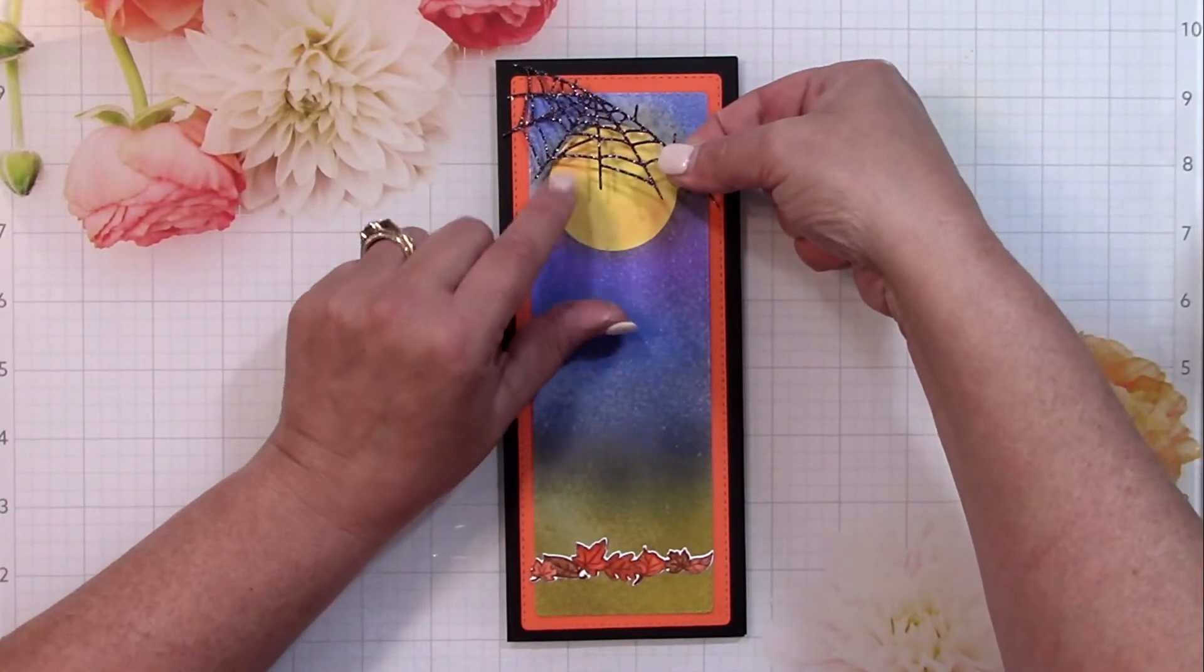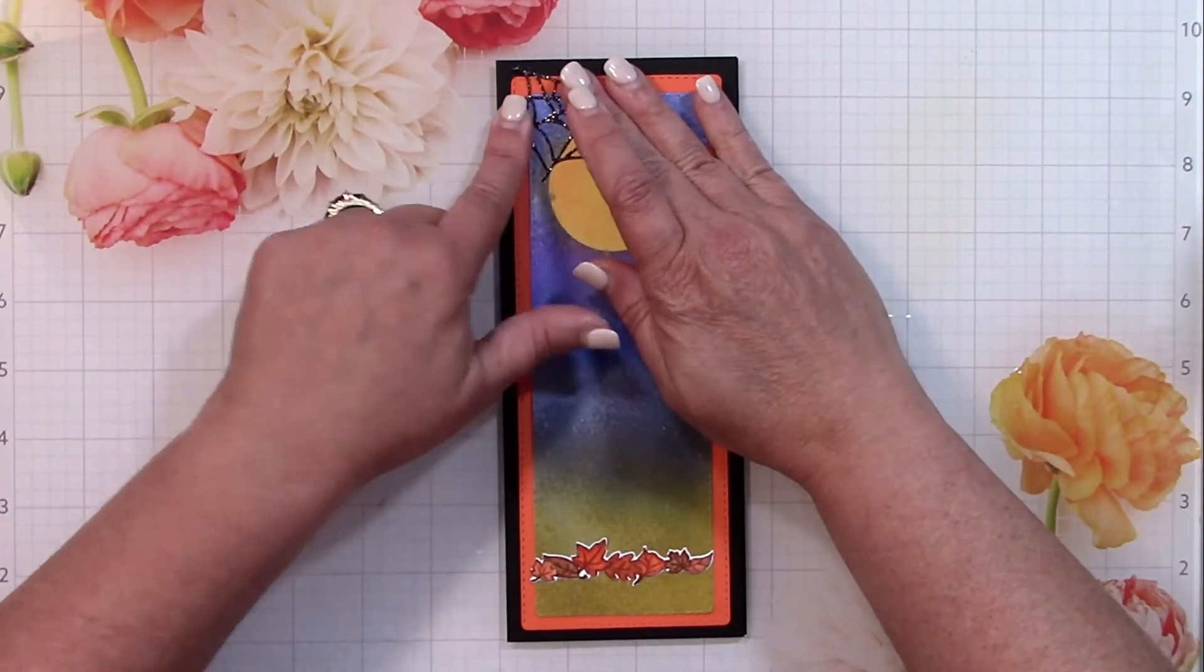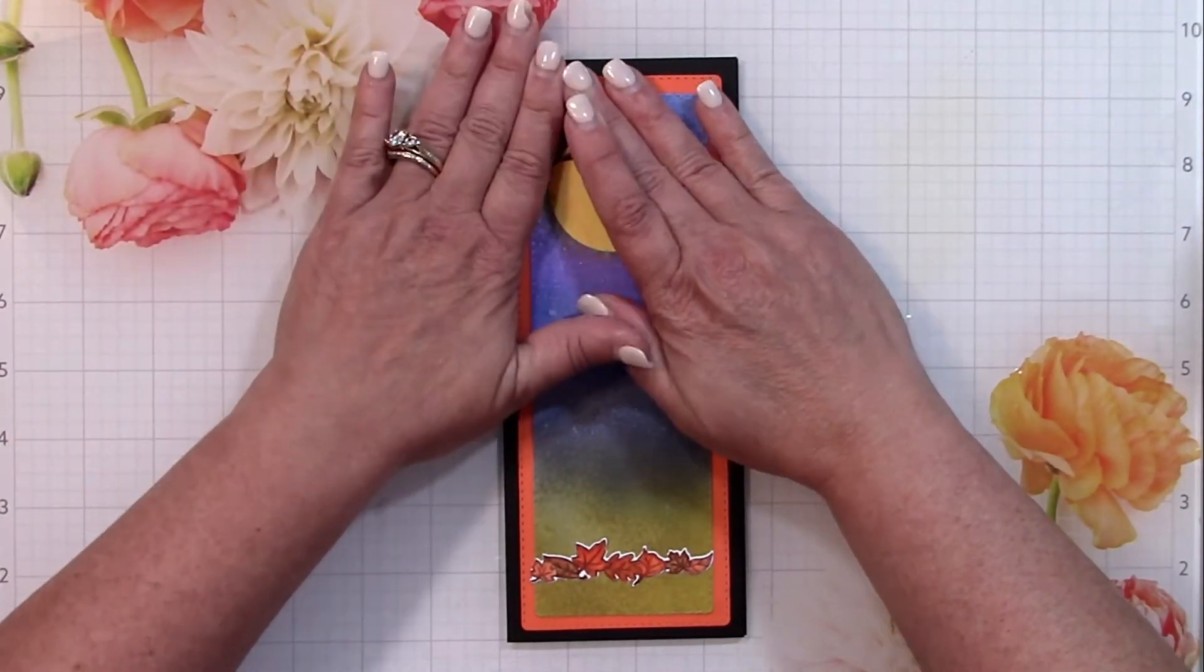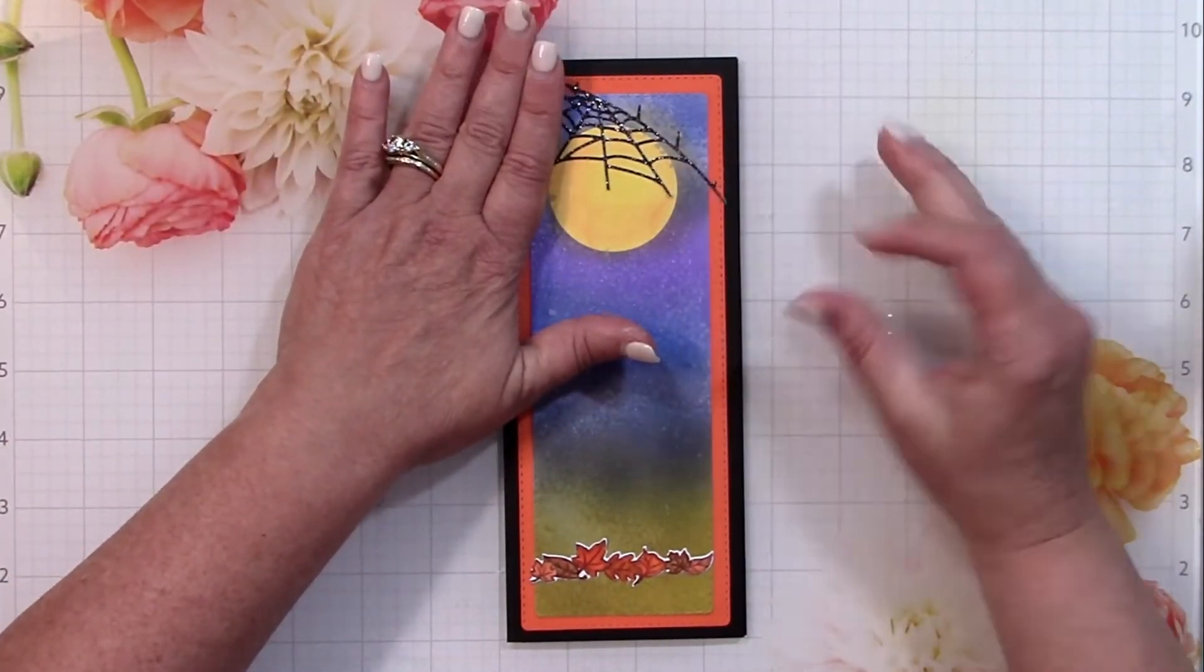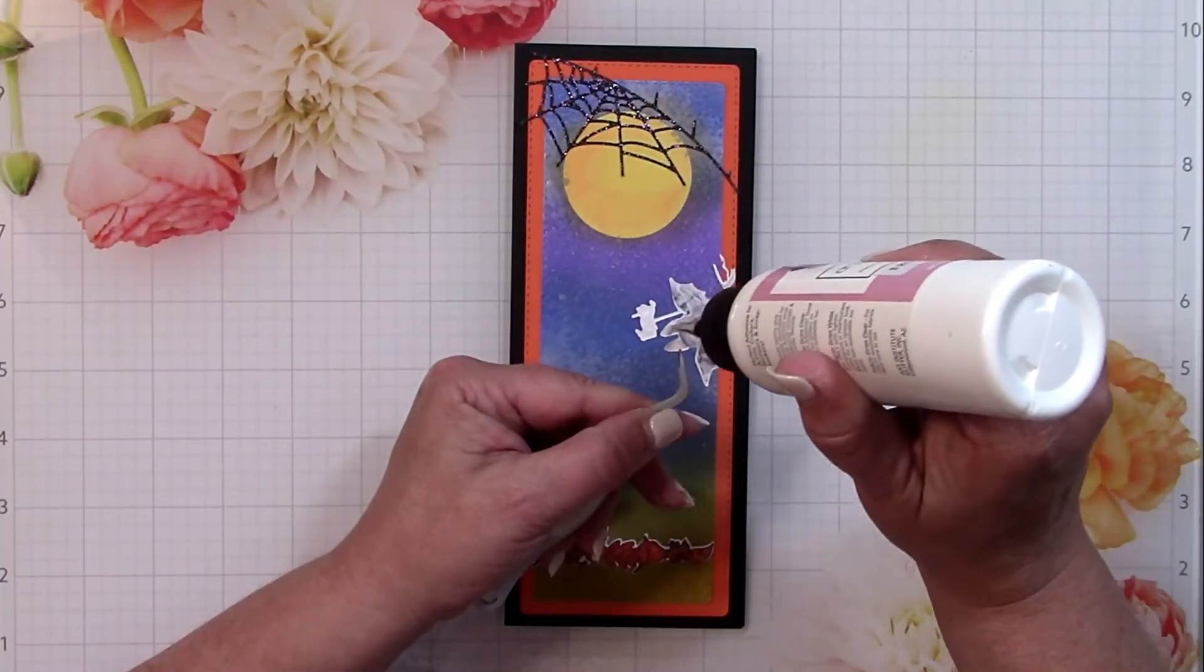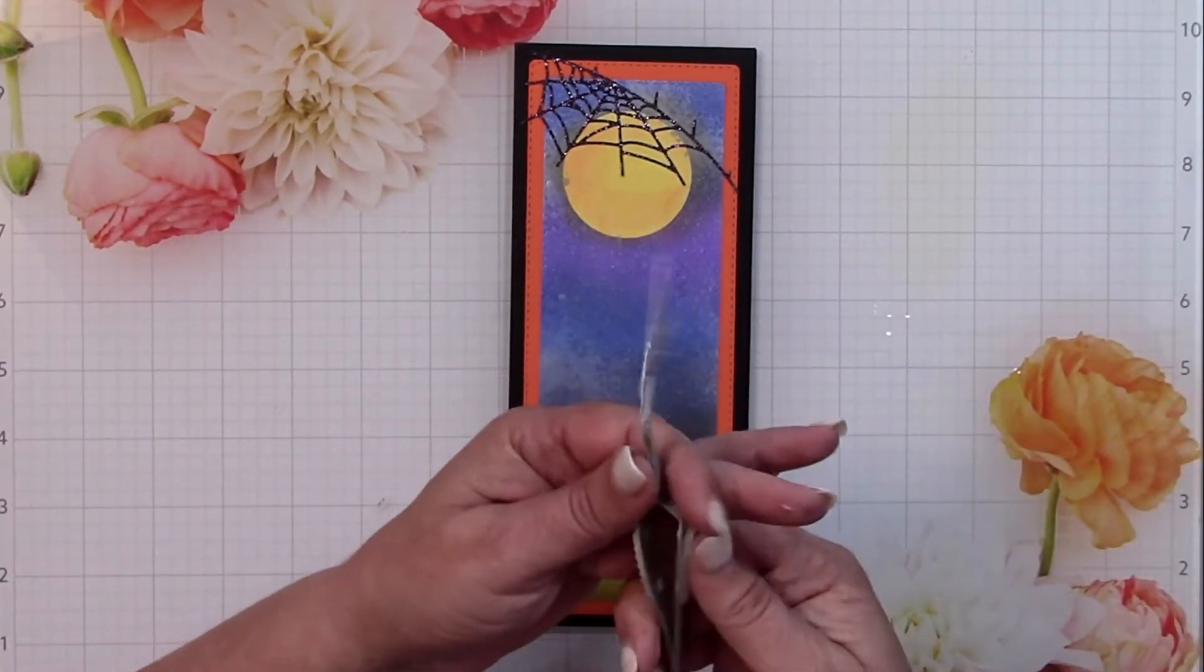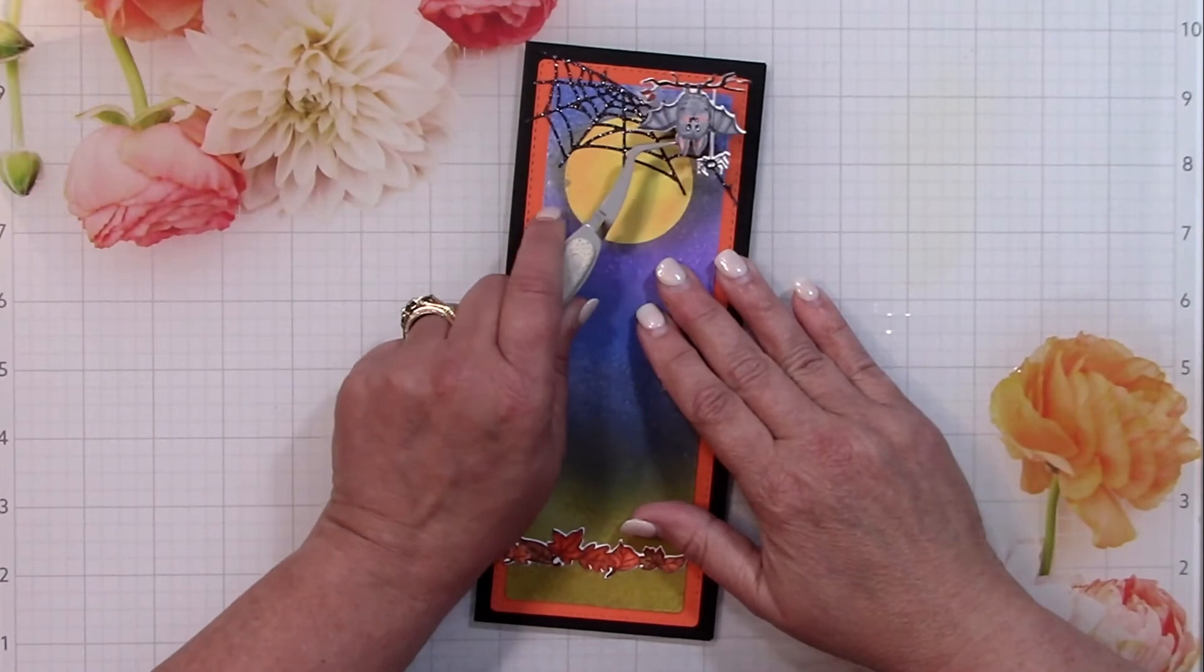Next I'm going to start applying some of those fabulous webs that I had cut out of black glitter card stock. I wanted one of these to go across the moon and you can see now that the splotches are starting to kind of disappear, the seepage if you will, because your eye is already looking at everything else.